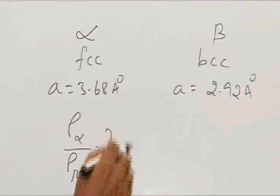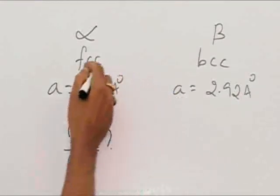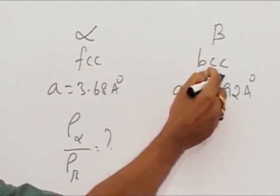In this problem, an element crystallizes in two allotropic forms: one is FCC and another one is BCC.